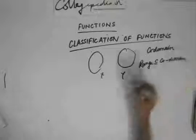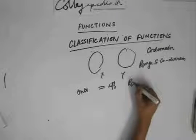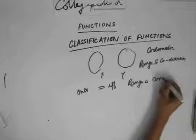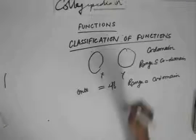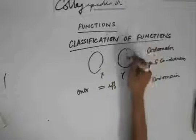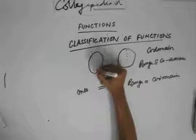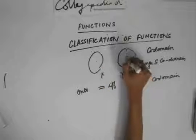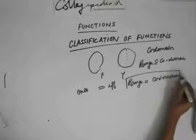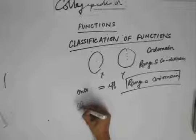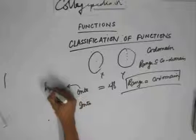A function is an onto function if the range is equal to the co-domain. What that means is, if I take any element in set y, it should have a pre-image in set x. In other words, all the elements of set x cover all the elements in set y as an image. That is what an onto function is — range equals co-domain. If range is not equal to co-domain, it's an into function. Onto functions are also called surjective functions.